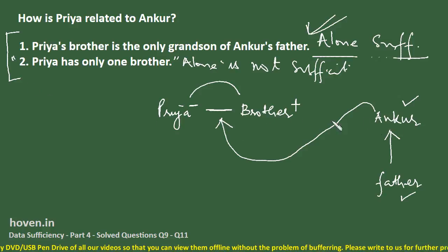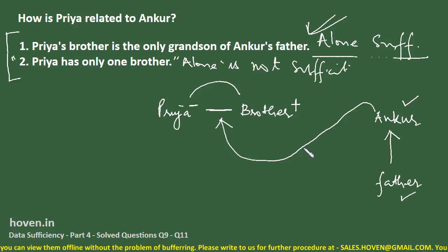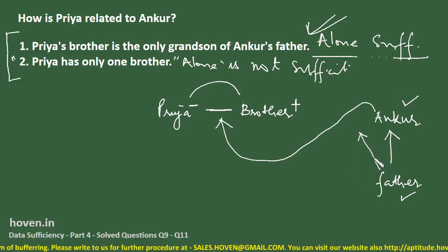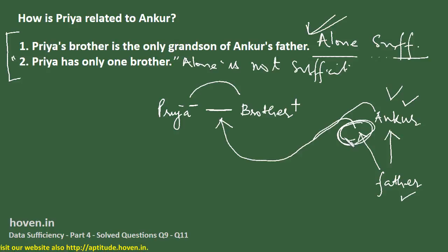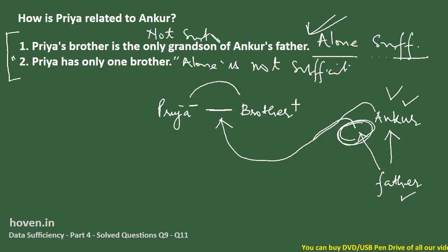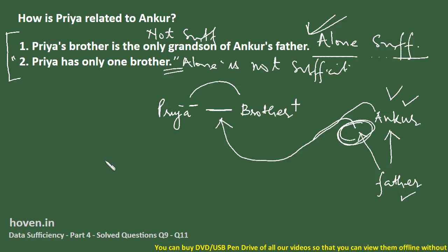Wait — I think I made a mistake. Ankur's father could have two sons, making Ankur one of them, while Priya's father could be an unknown person — a different son. In that case, Ankur could be Priya's Chacha (uncle) or her father. So we cannot determine the relation on the basis of statement one alone either. Both statements together are also not sufficient.